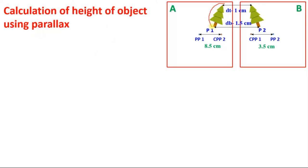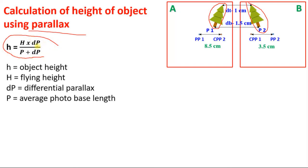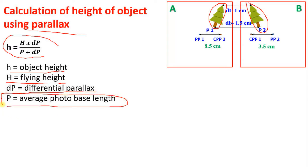Here is a tree shown in photographs number 1 and number 2. To calculate the height of the tree using parallax, we use the formula: h = H × dp / (p + dp), where h is the height of the object (the tree), H is the flying height, dp is the differential parallax, and p is the average photo base length.